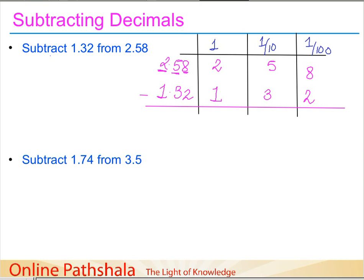For the subtraction, we start from the rightmost column, which is the smallest value. So we get 8 minus 2 equals 6, 5 minus 3 equals 2, and 2 minus 1 equals 1. This gives us the number 1, 2, 6 — but where should we place the decimal point?